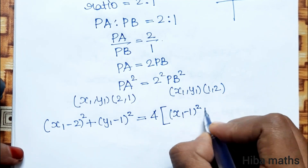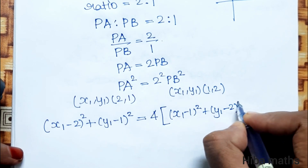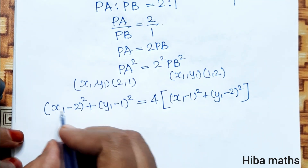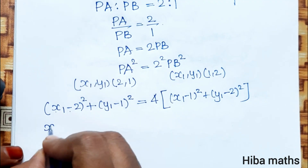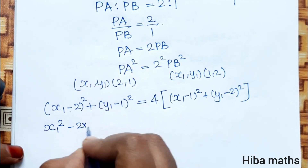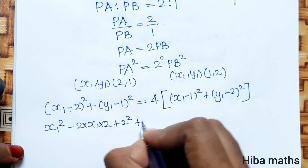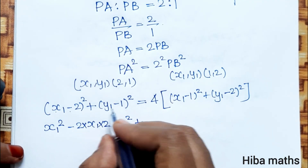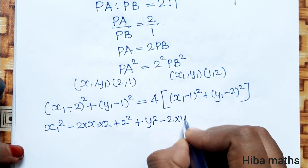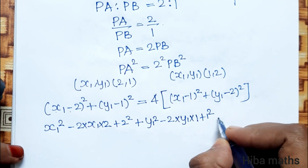PB points give: (x1 minus 1) whole square plus (y1 minus 2) whole square. Expanding using the (a minus b) whole square formula: a squared minus 2ab plus b squared, applied to both sides.